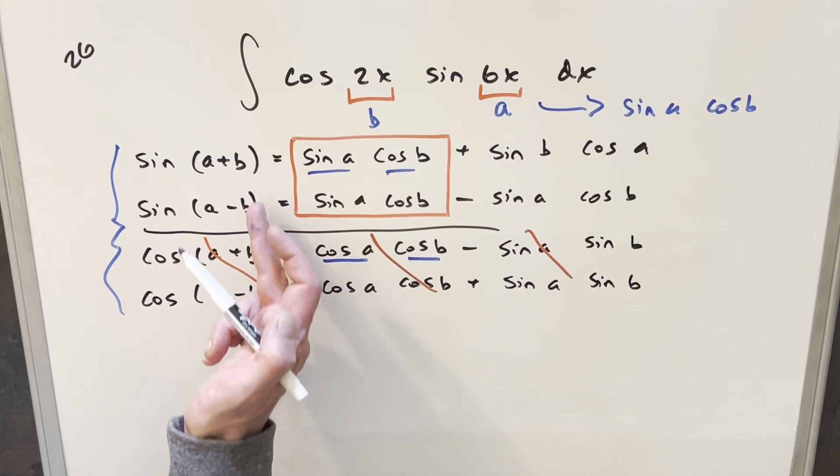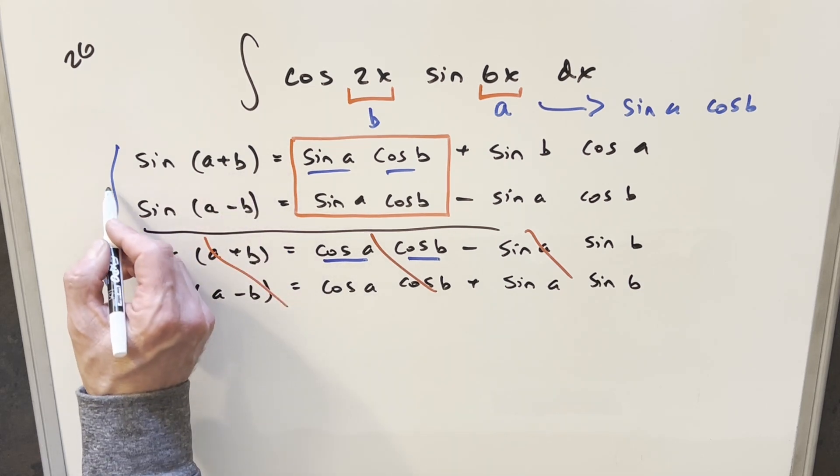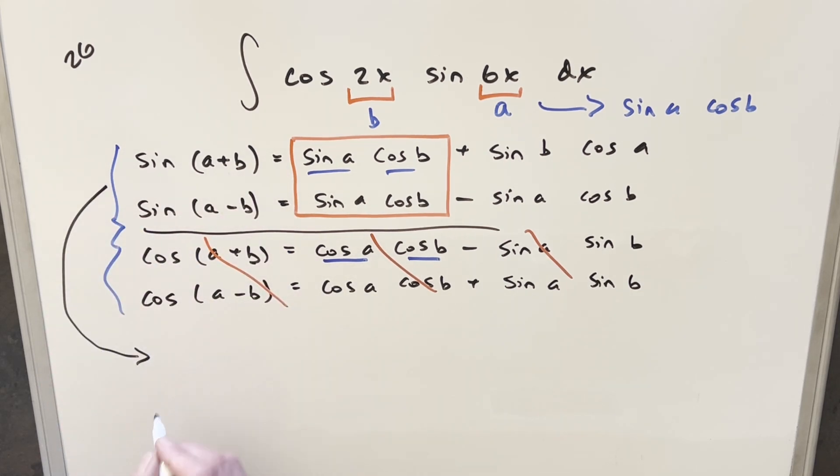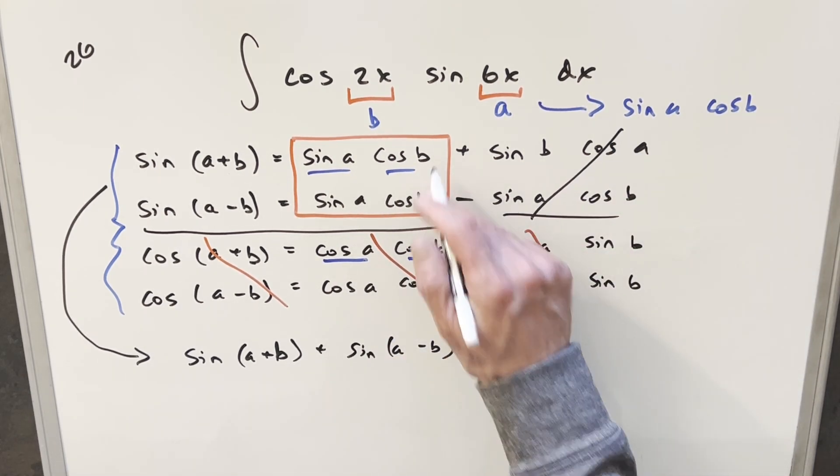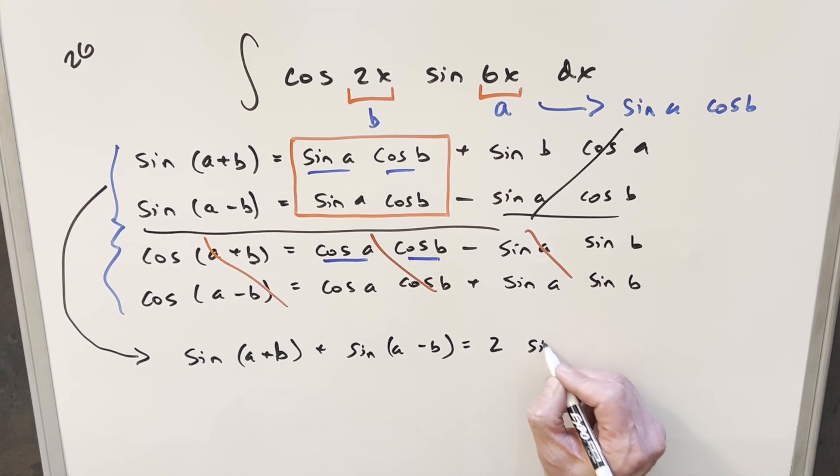So what I can do is just take these first two formulas, the angle sum, angle difference for sine, we can just add them together and bring it down here. So when I do that, we're saying we're adding sine a plus b, and sine a minus b. And when we do that, notice these last terms, these are going to just cancel, and we just get two copies of this, we're going to have two sine a cos b.